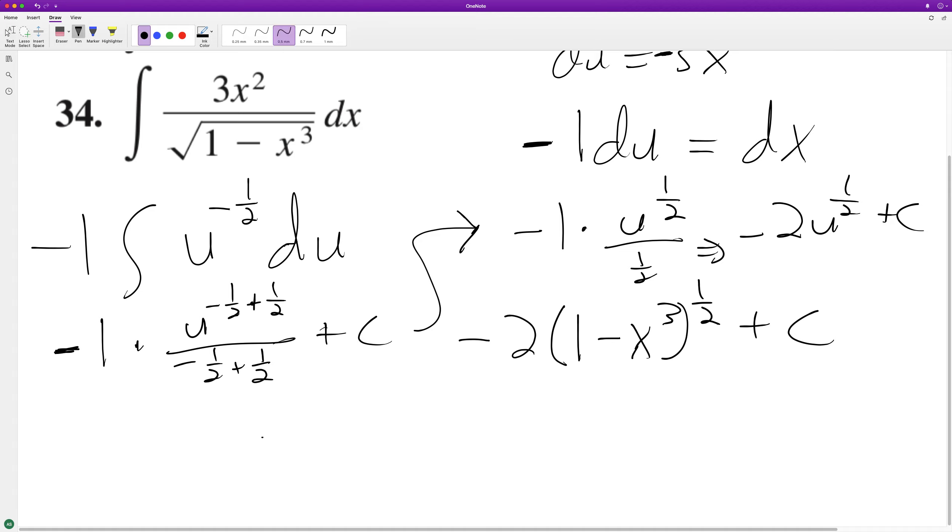But let's go ahead and test it by taking the derivative. So we get negative 2 times 1 half times the derivative of the inside, which is negative 3x squared.